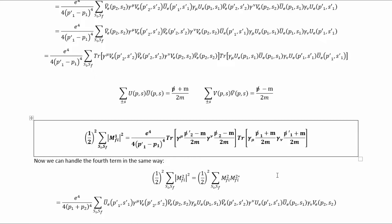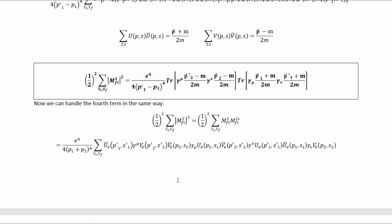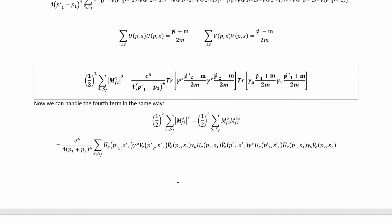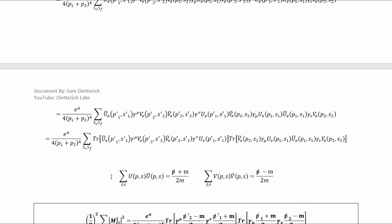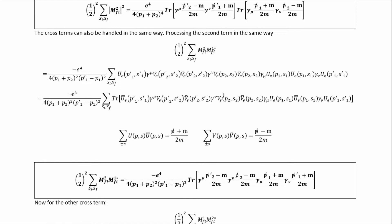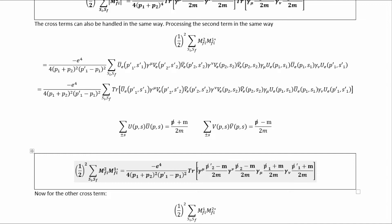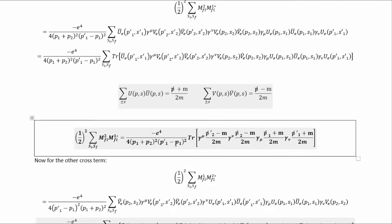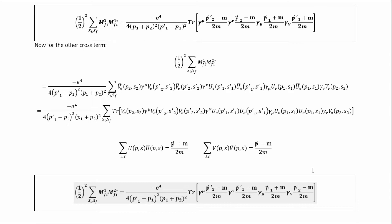We can do some index shuffling to get rid of the metric tensors, and pull out factors to the front that don't need to be under the sum. Then we can rearrange scalar factors in preparation to use completeness relation identities, and strategically take traces of scalar factors using the cyclic property of the trace to eliminate all the spinors. Inserting those results gives us the first modulus-squared term. We then handle the second modulus-squared term in the same process: pulling factors out, doing index shuffling, moving scalar factors, adding traces, and using the cyclic property so that these identities replace all the spinors.